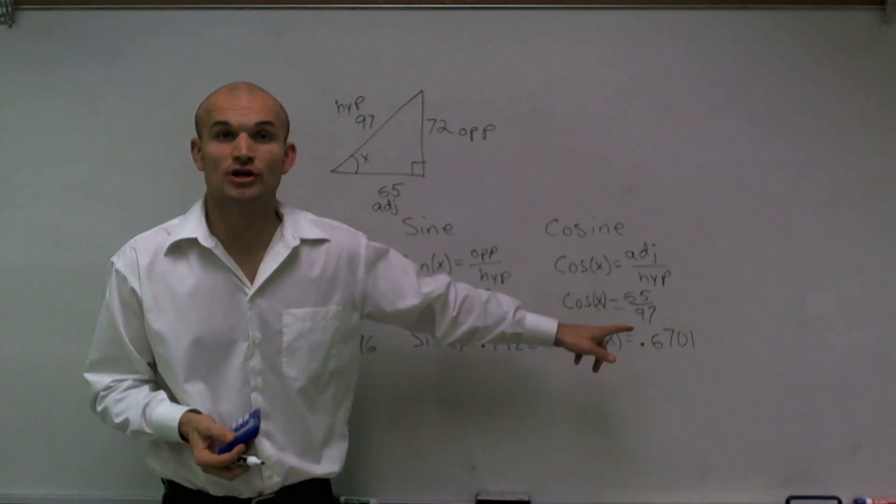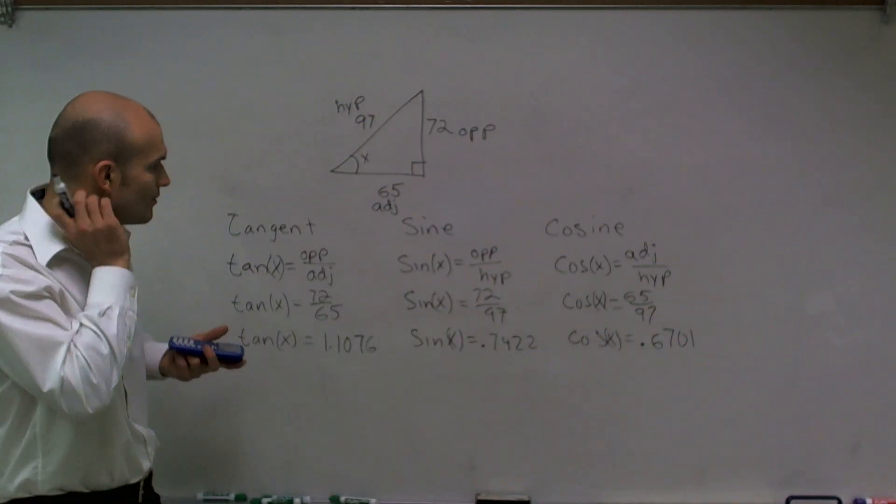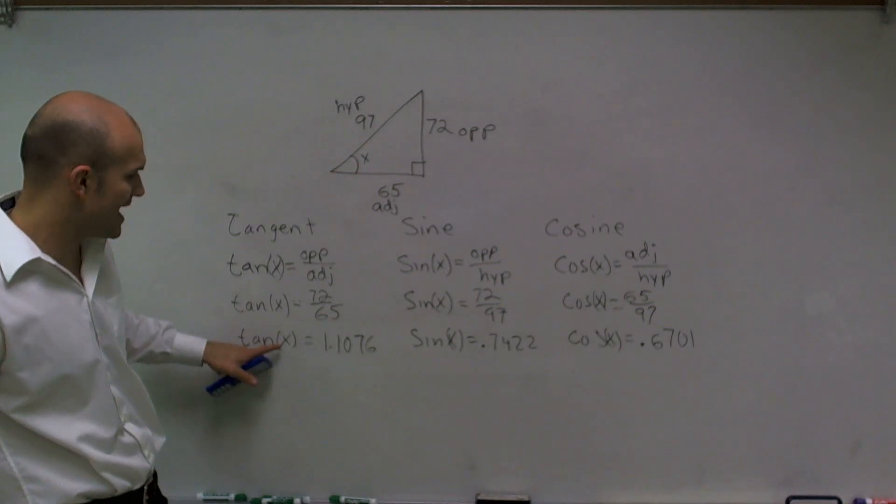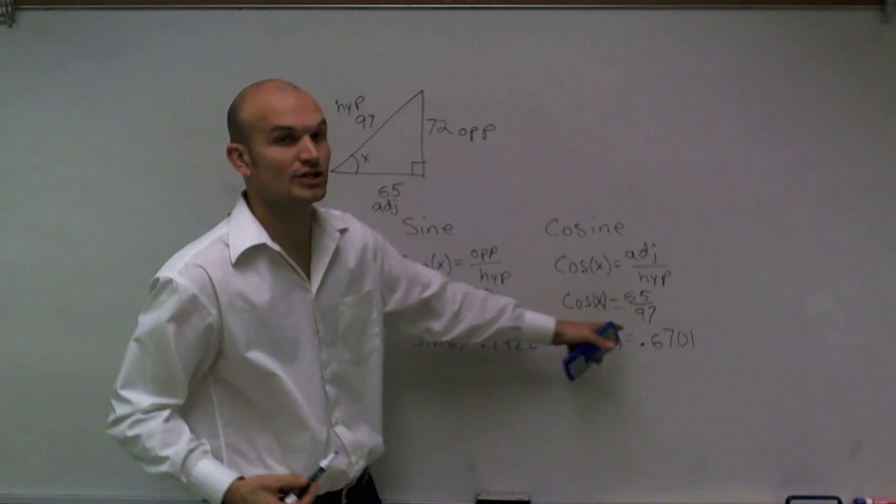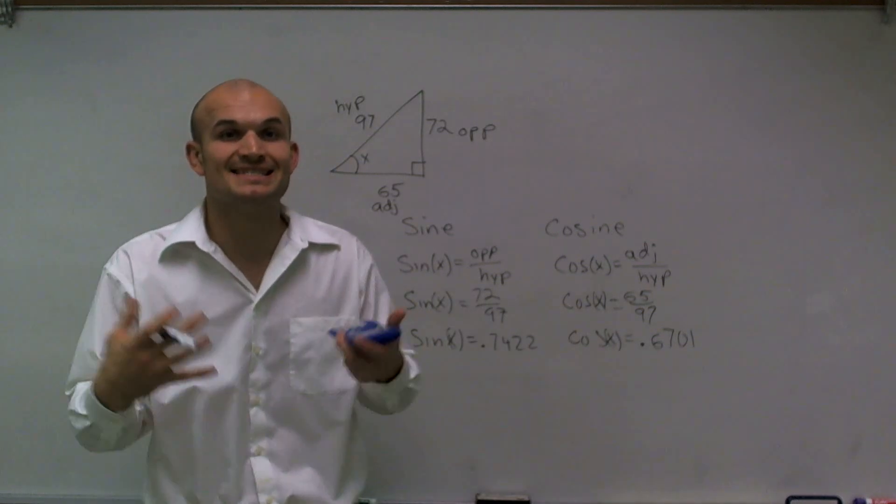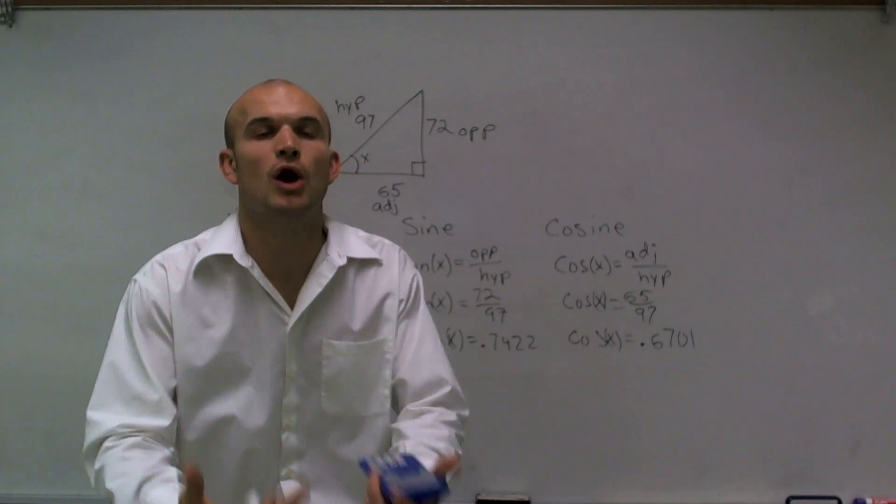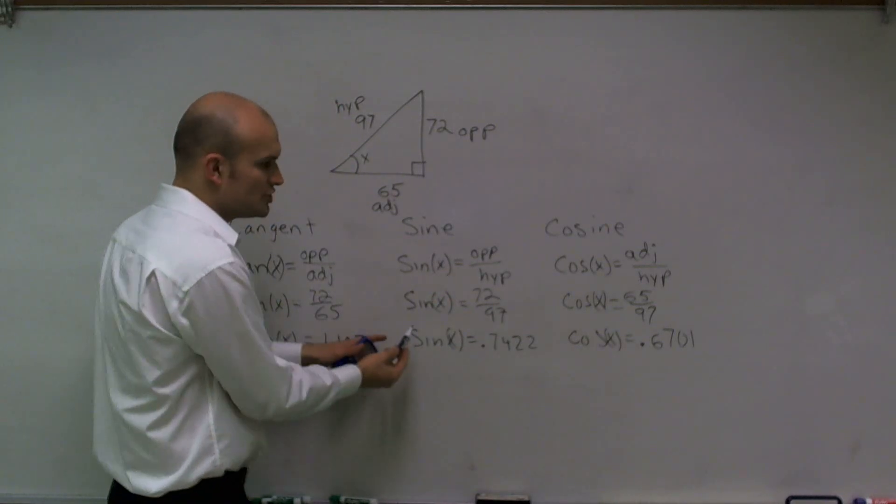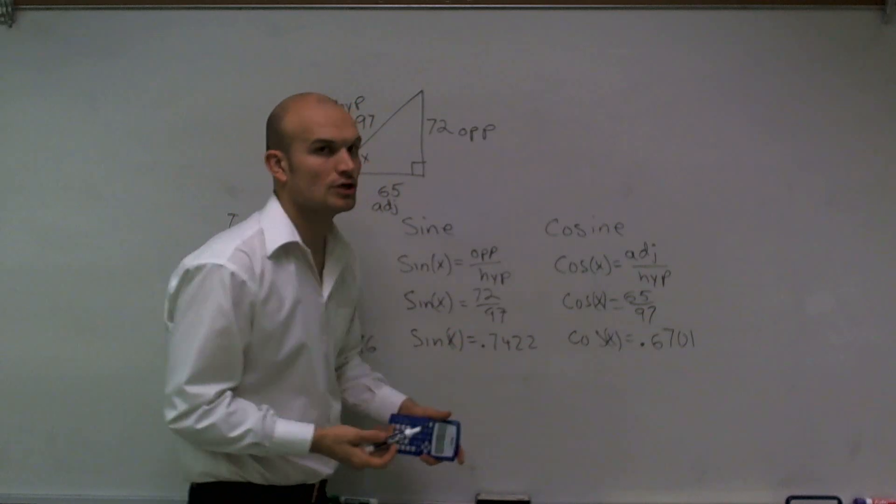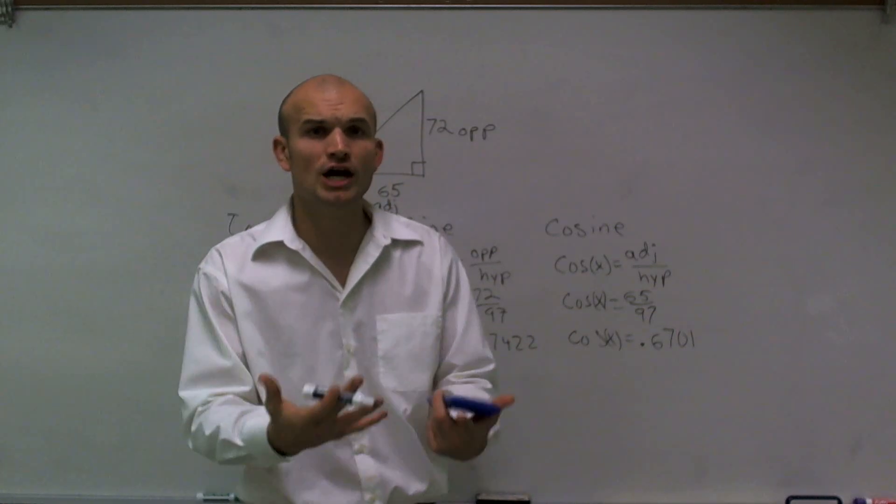Notice my ratios are all different. But remember, we want to find the value of x. Right now we're taking the tangent of x, the sine of x, or the cosine of x. If I want to find exactly what the value of x is, I need to undo my functions. I need to undo the tangent function, undo the sine function, and undo the cosine function. So how do we undo those functions?